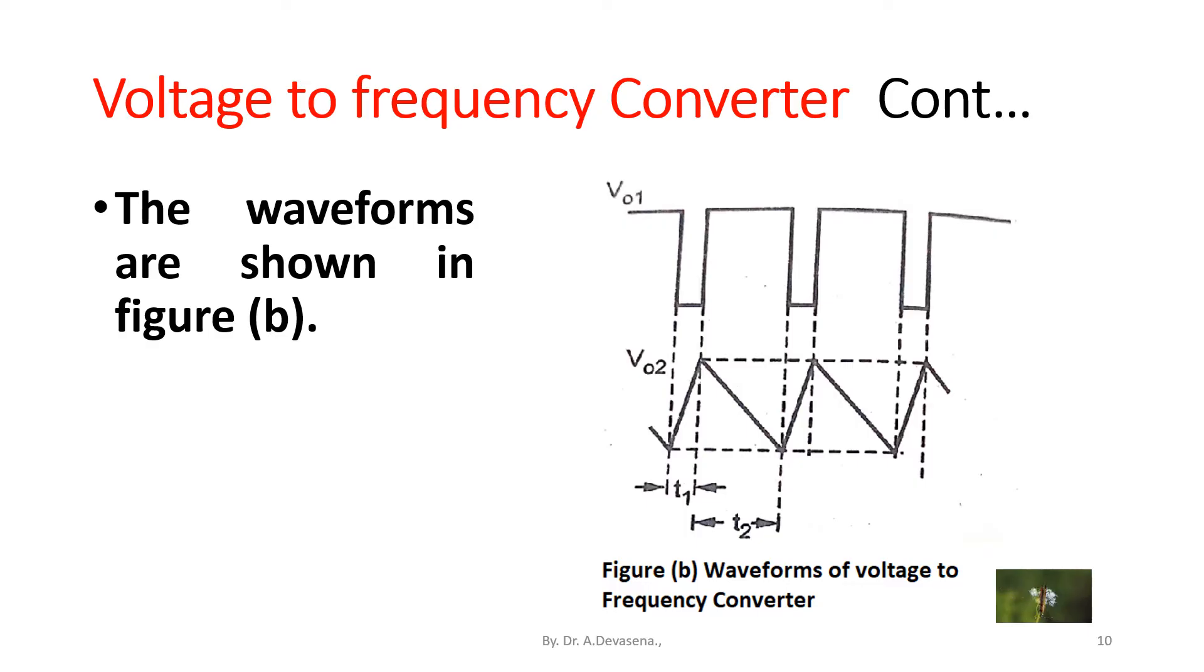V_o1 is the waveform obtained from the comparator A1 and V_o2 is the waveform obtained from the integrator, that is op-amp A2. These two waveforms V_o1 and V_o2 provide the waveforms of voltage to frequency converter.